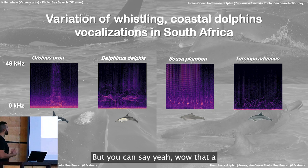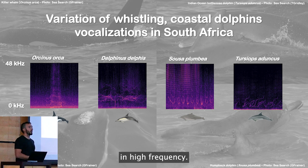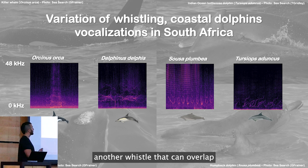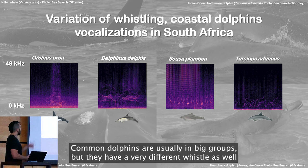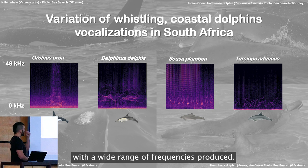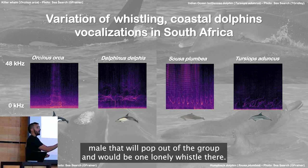You could say killer whales produce pulsed sounds with higher harmonics at high frequency, but they also produce whistles that can overlap with humpback dolphins and common dolphins. Common dolphins are found in big groups and have a very different whistle with a wide range of frequencies produced. But again, since they are in big groups, you can have one individual that pops out of the group producing one lonely whistle that you might mistake for a humpback dolphin.